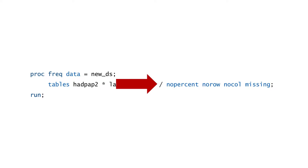Finally, to keep the table cleaner, I've added the no percent, no row, and no col options. These suppress the output of the overall percent, row percent, and column percent respectively. I've also added the missing option, which tells SAS to display missing values in our contingency table in the same way it displays any other category. For this particular data check, the missing option is necessary.